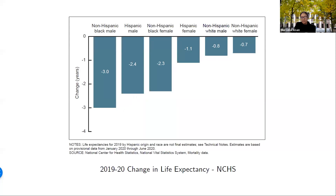This figure is from the National Vital Statistics report released in February, showing that while life expectancy declined sharply for all Americans, the burden was not equal. Life expectancy for non-Hispanic Black men declined a full three years, from 71.3 to 68.3 years, followed in order by Hispanic males with a decline of 2.4 years from 79 to 76.6, followed by non-Hispanic Black females with a decline of 2.3 years, Hispanic females, and then non-Hispanic white males and females.